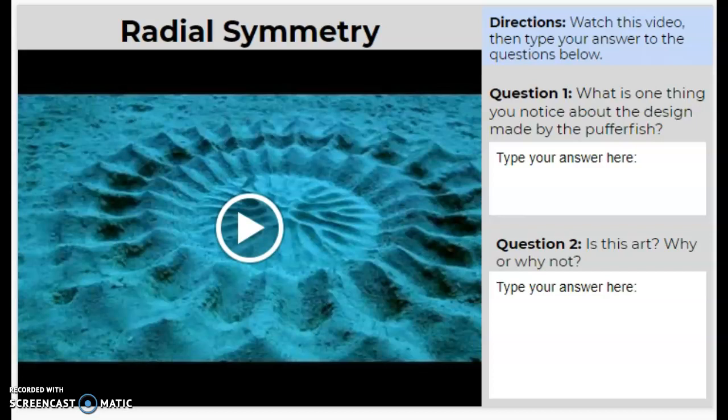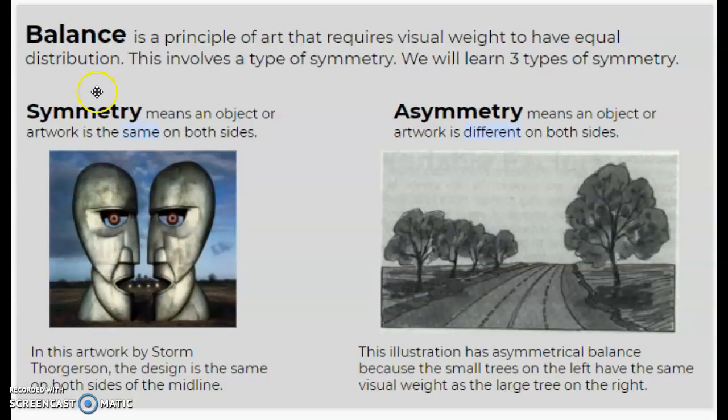Okay, then you read about balance using symmetry. That means something is the same on two sides, so if there's a line down the middle, then either side is the same.